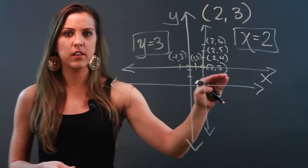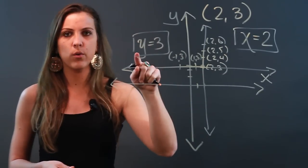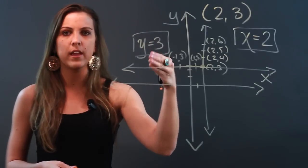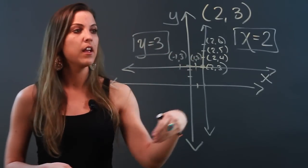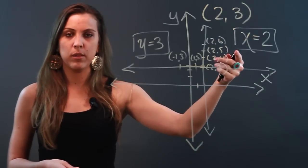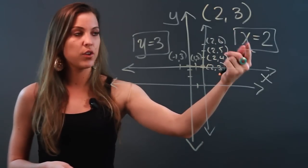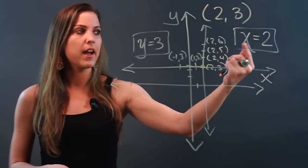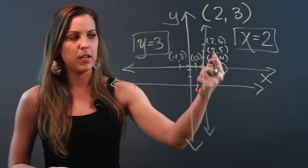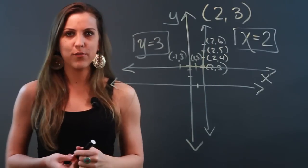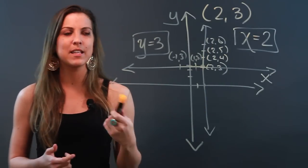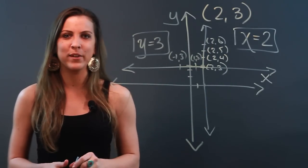So for horizontal lines, your y-coordinate is consistent and your equation is going to be y equals a constant. And for vertical lines, the x-coordinate is going to be the one that's constant, so your equation will be x equals a constant — that constant being whatever the coordinate is. That's how you write equations for vertical and horizontal lines that pass through a given point.